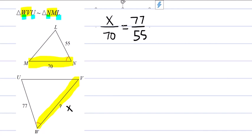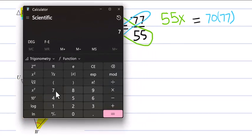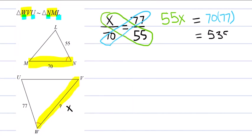Now we are going to cross multiply to solve. I know that this X times the 55, 55X is going to equal what I get when I do the other cross multiplication, which is 70 times 77. So 70 times 77, 5390.